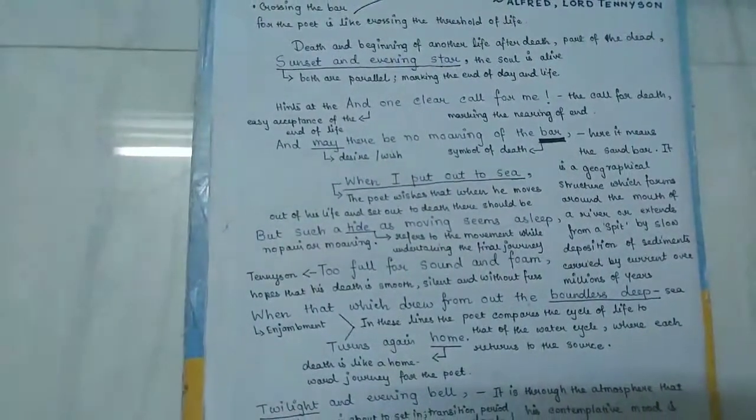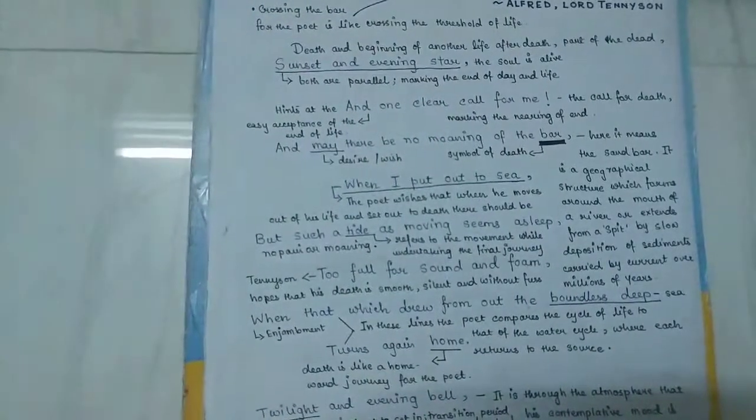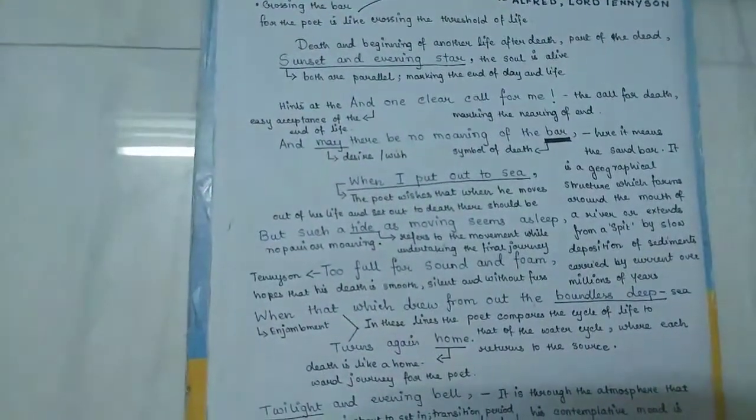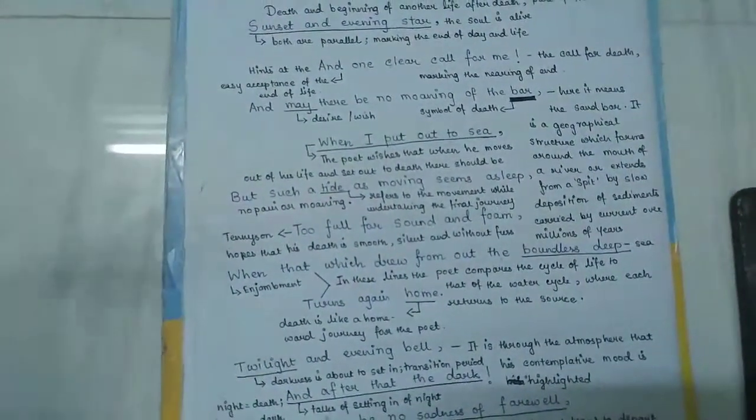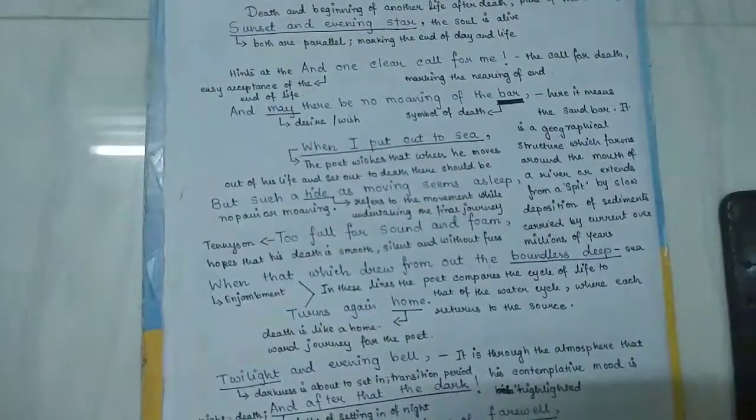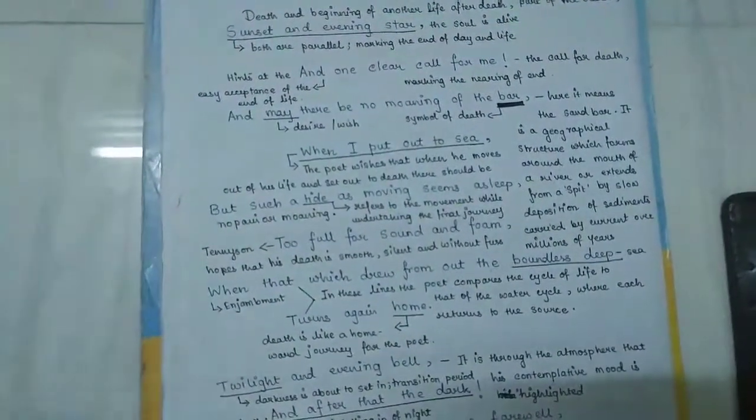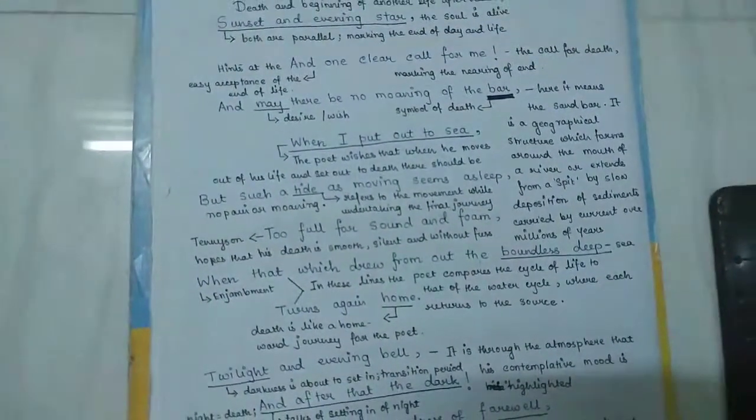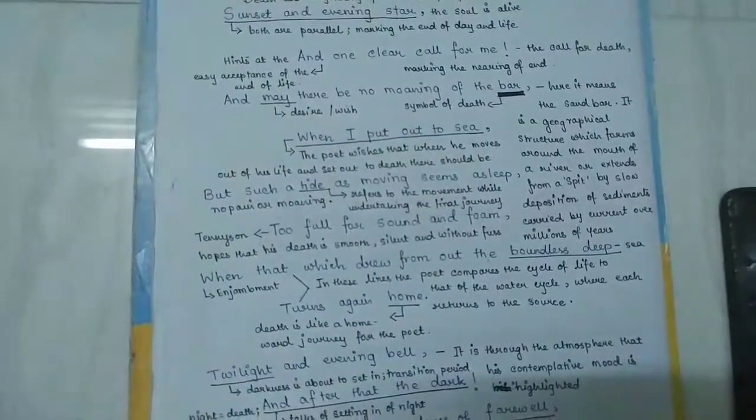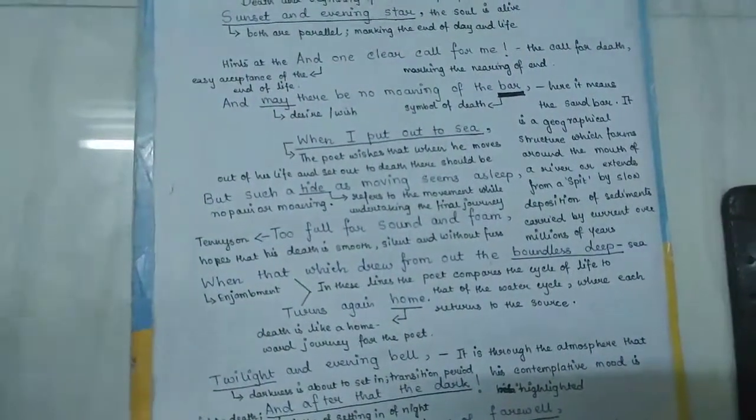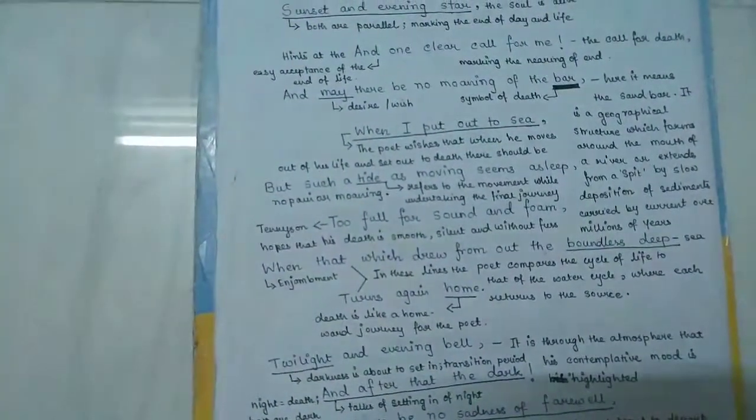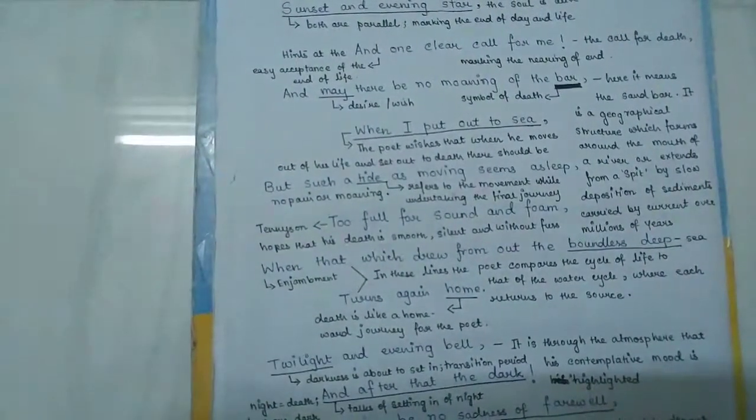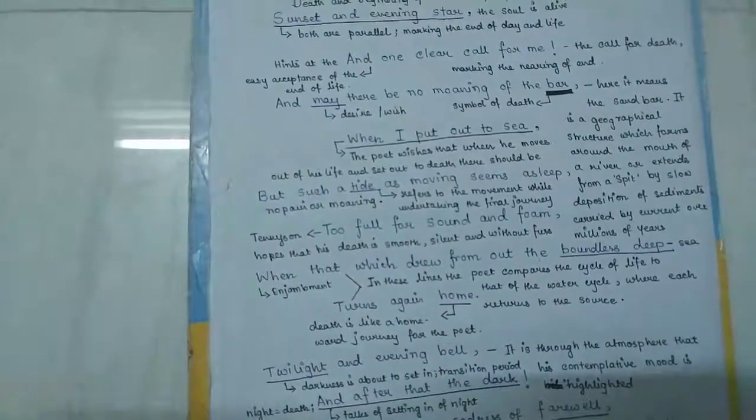Similarly, the poet Tennyson is trying to express that life had begun from God. If we can accept Tennyson's belief in Christian ideas, according to his notions and like many other Victorian poets, life began from God and it should end in God. So God is home, and when he is telling turns again home, he tries to talk of returning to his homeland. Death is like a homeward journey for the poet.